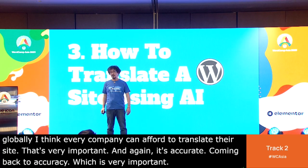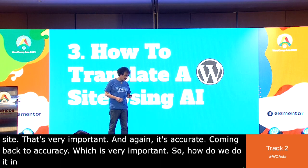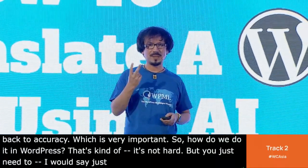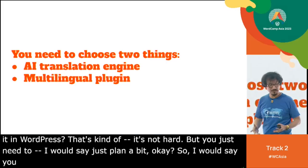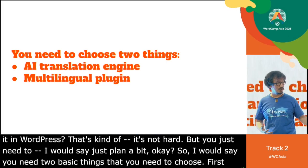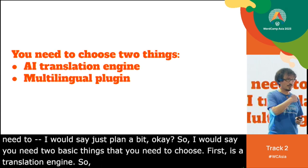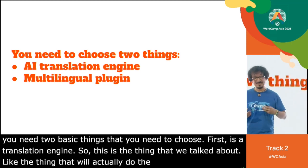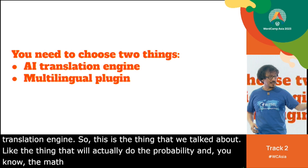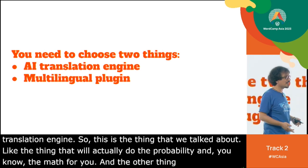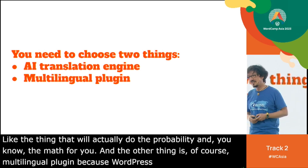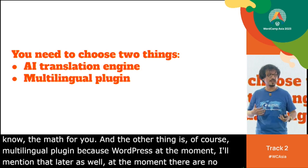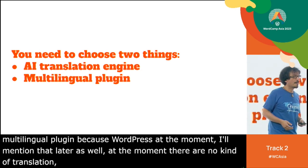So how do we do it in WordPress? It's not hard, you just need to plan a bit. I'd say you need two basic things to choose: first, a translation engine — the thing that does the probability and math for you; and the other thing is, of course, a multilingual plugin. Because WordPress at the moment has no multilingual features in the core, so you need to use a plugin.